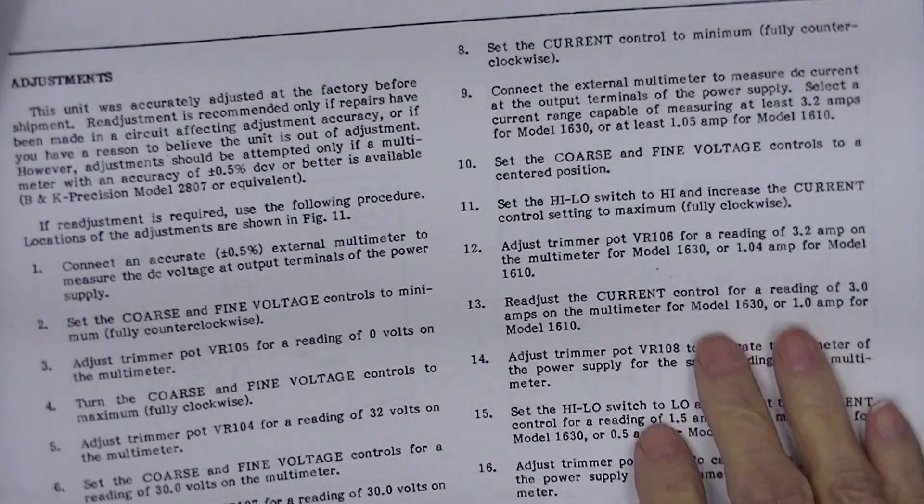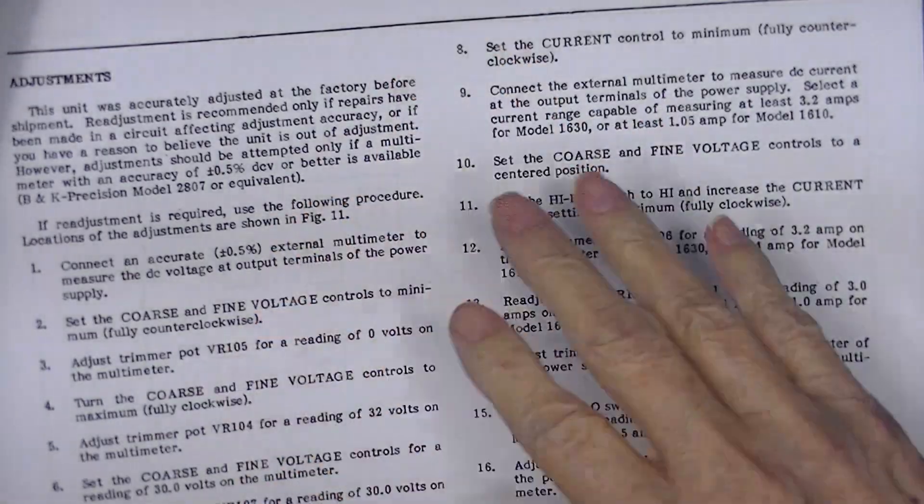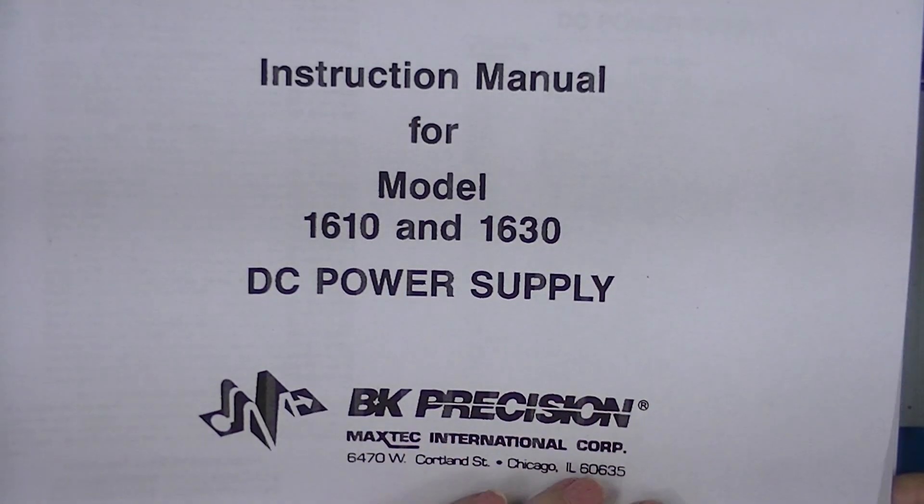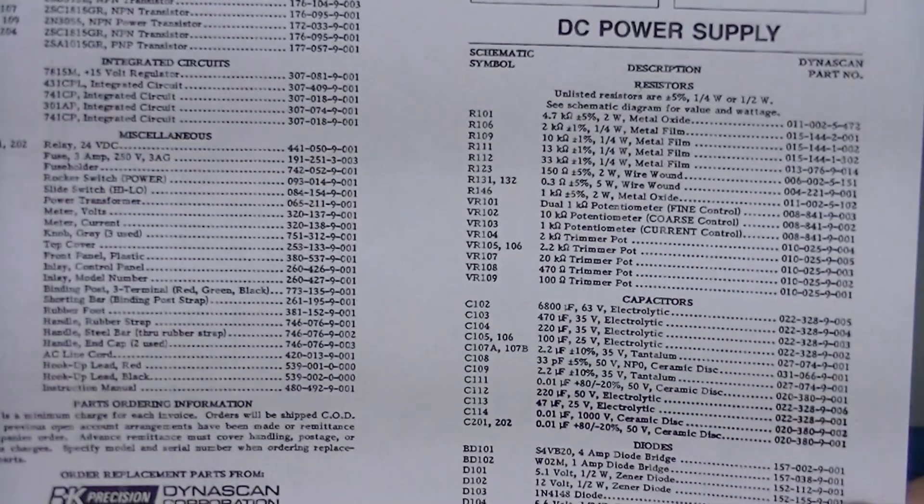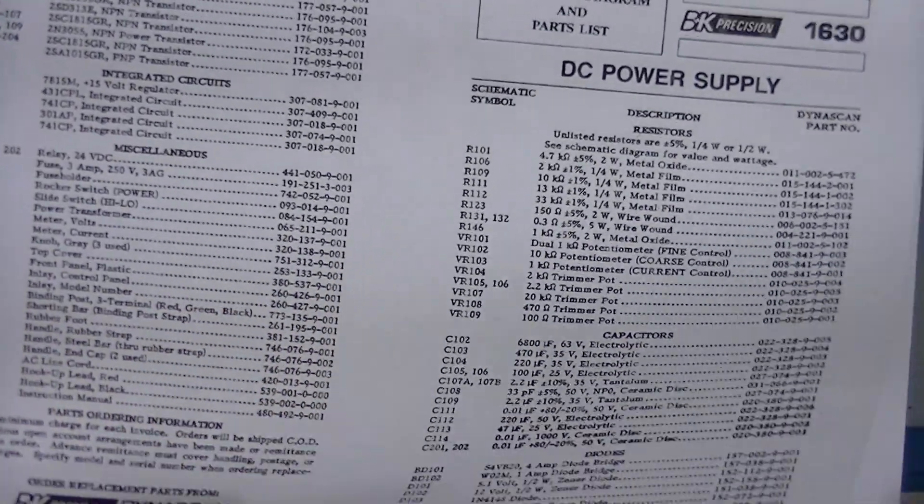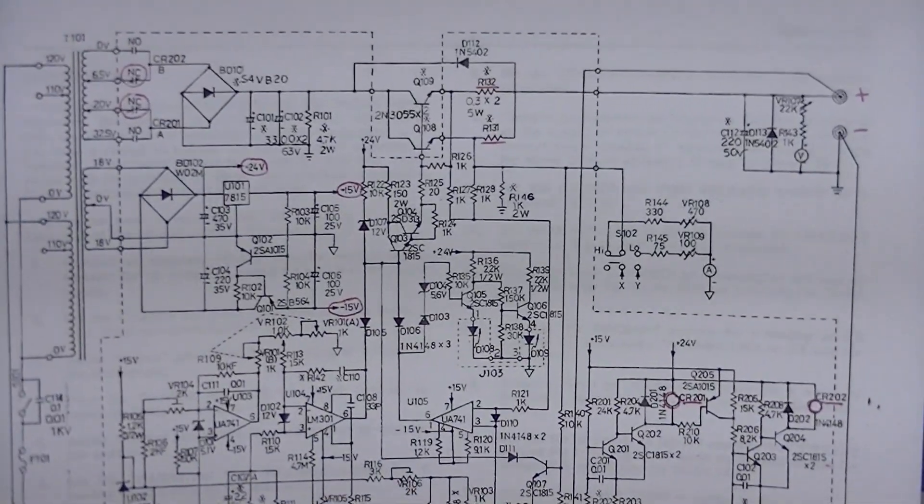The instruction manual had calibration information, but did not include the parts list and more importantly the schematic.